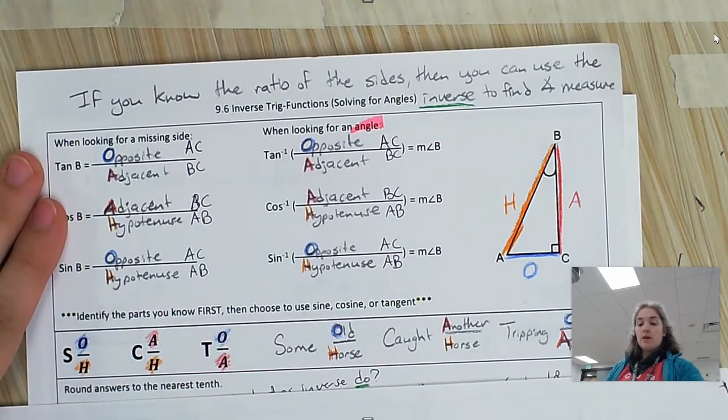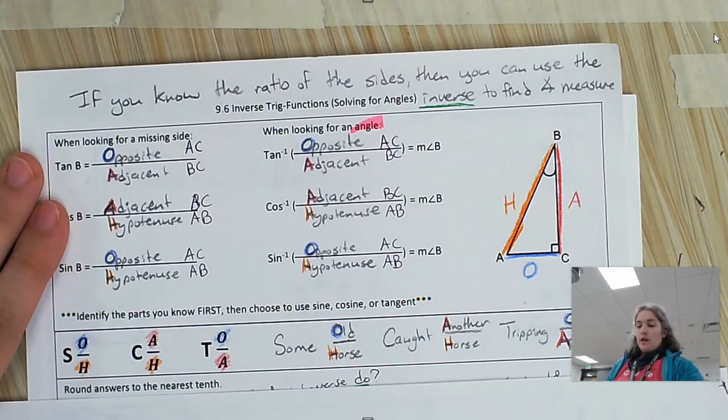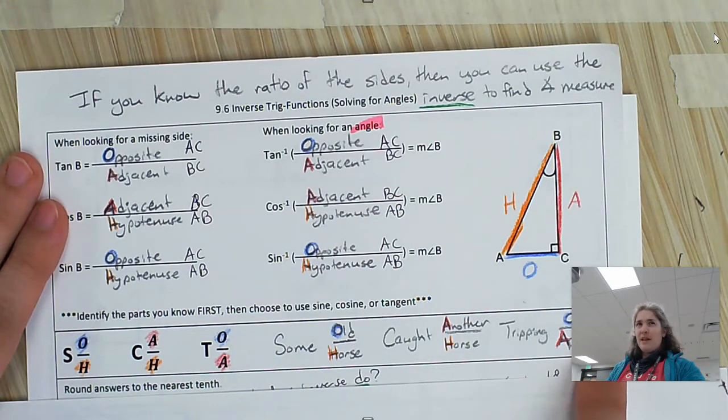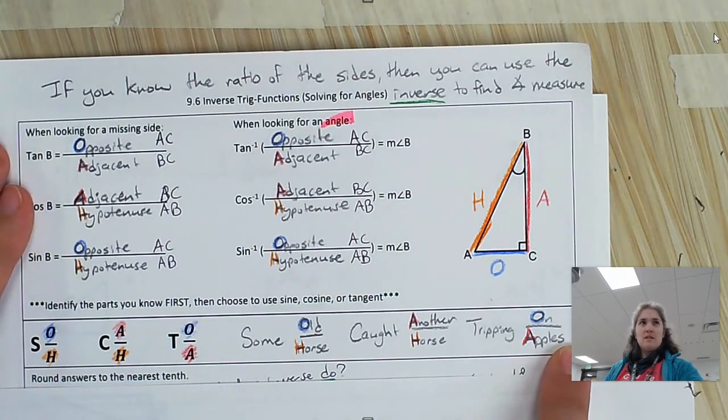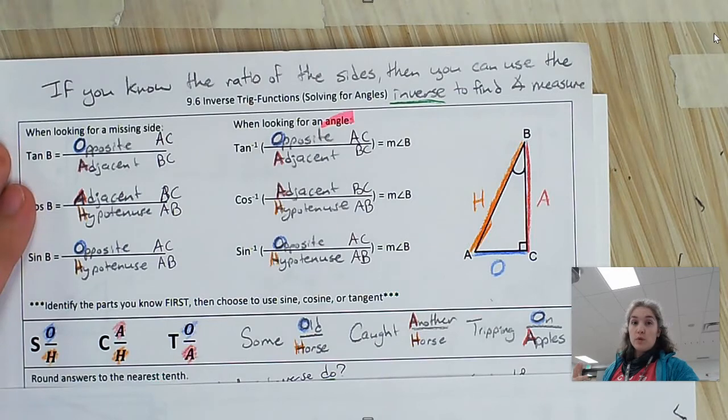So SOHCAHTOA is one way to remember the order, which ones go with which. Here's another mnemonic device: Some old horse caught another horse tripping on apples. It's another way of remembering it. These are memory tools. They're not tricks, they're tools to help you remember.